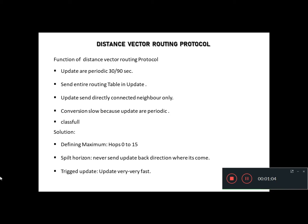There are some drawbacks to distance vector routing protocol, and solutions have been defined. First, define maximum hop count: 0 to 15 hops. A hop is the travel from one router to another router. Next is split horizon: never send an update back in the direction from which it came. Next is triggered updates, which are very fast.